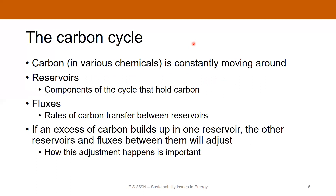Let's start off by talking about the carbon cycle. Naturally on earth, carbon in various chemical forms is constantly moving around between different reservoirs using different pathways. Reservoirs are defined as the components of the cycle that hold carbon, and fluxes are the rates of carbon transfer between reservoirs.